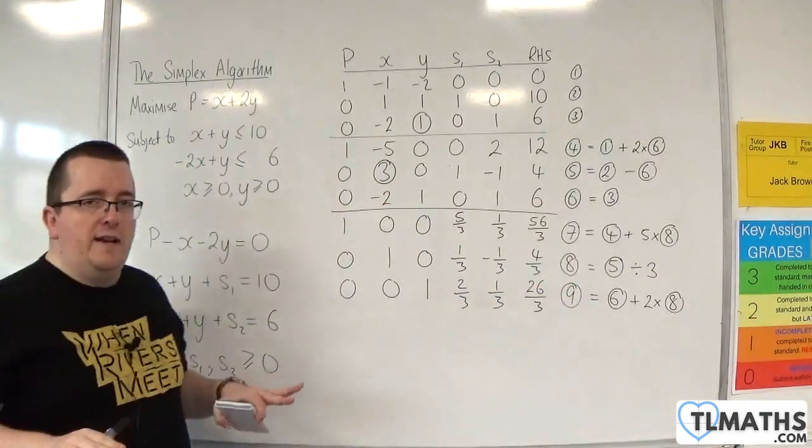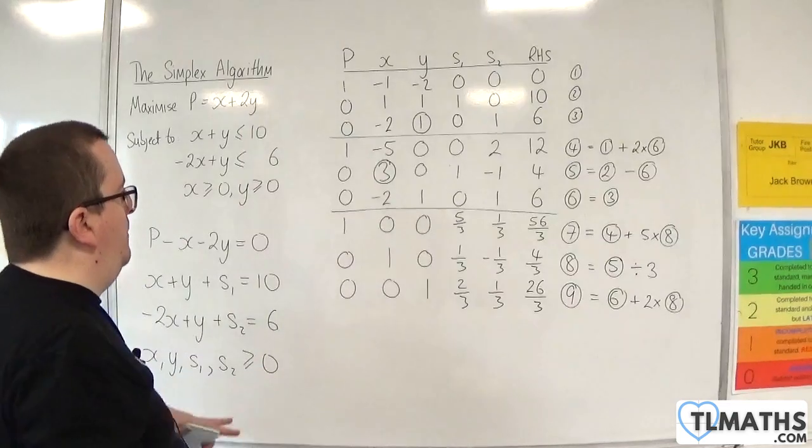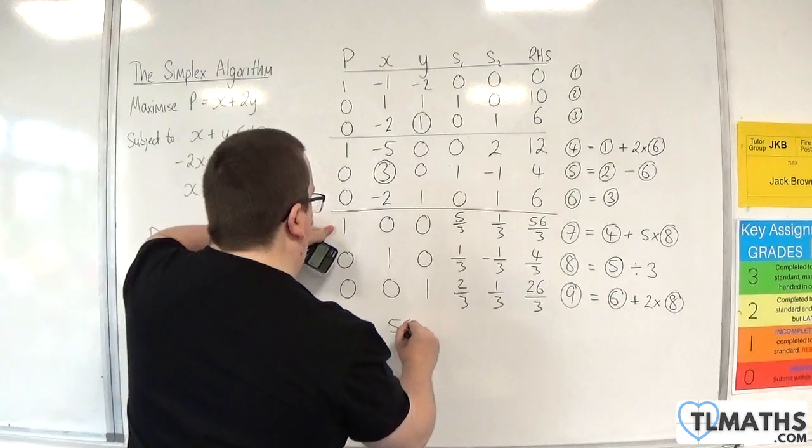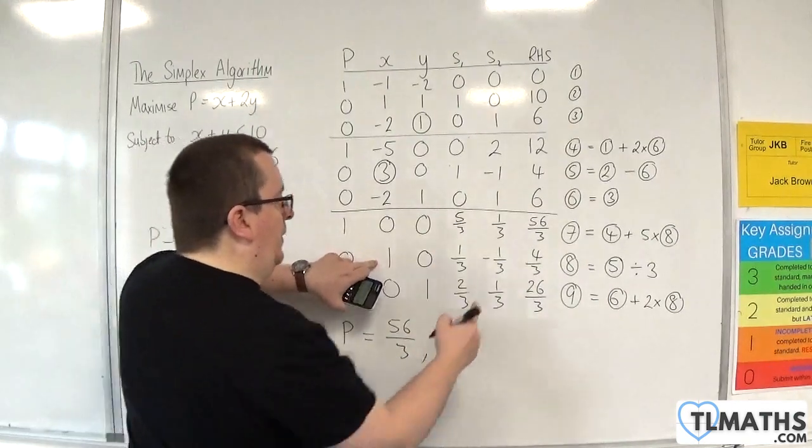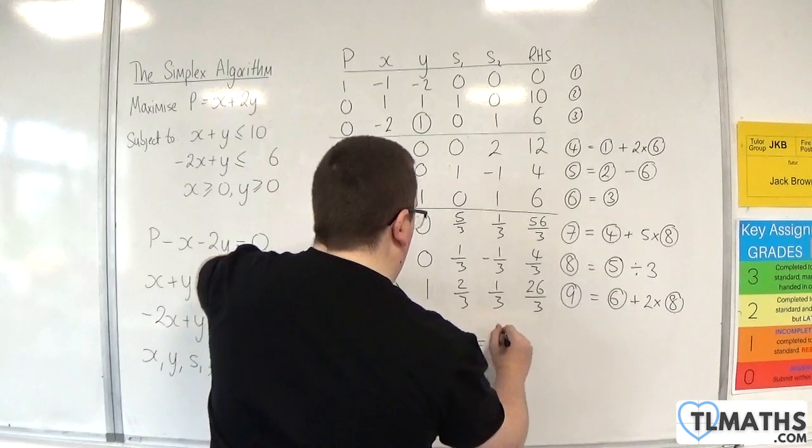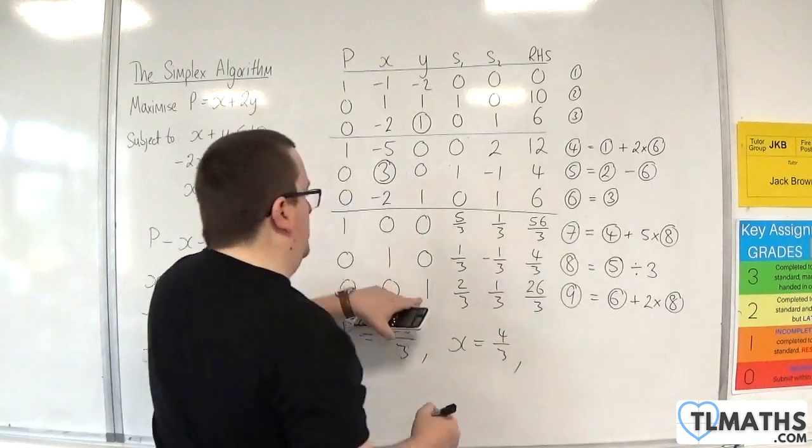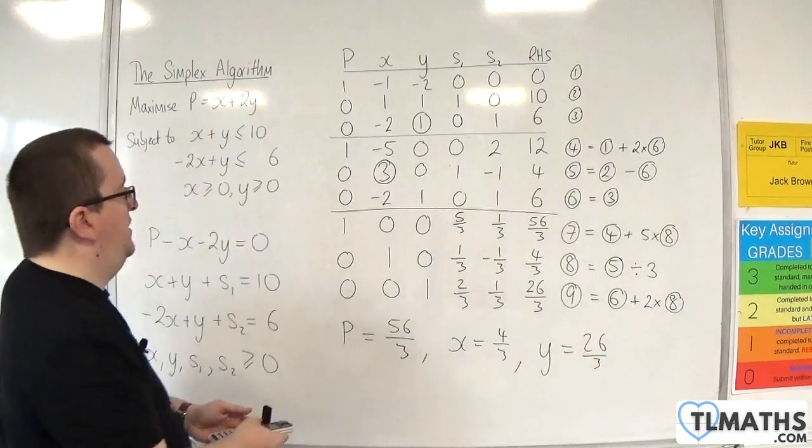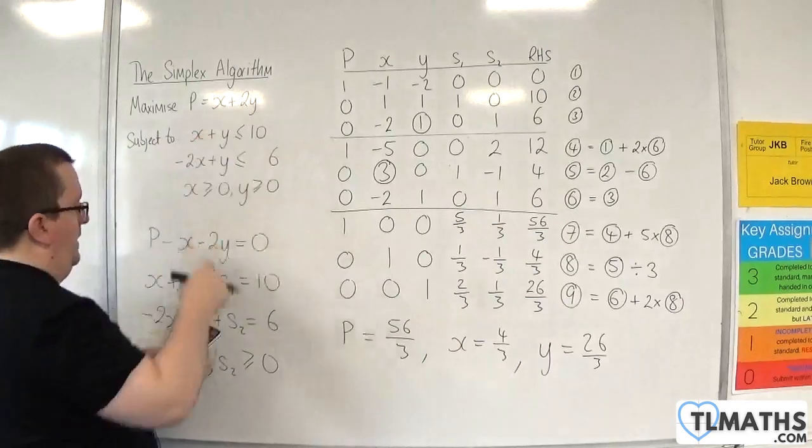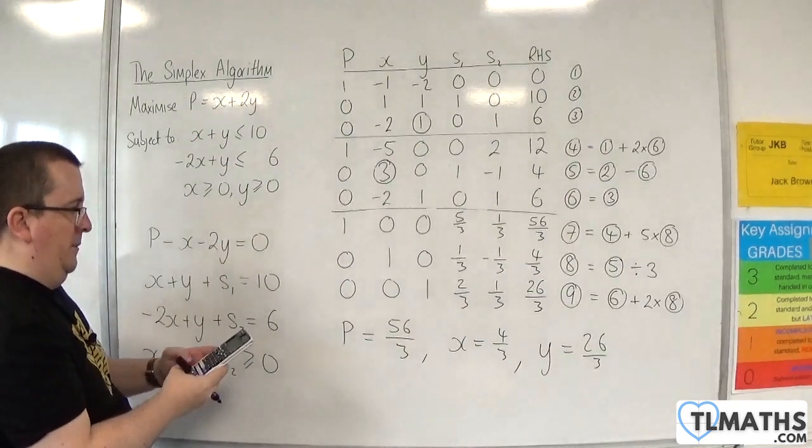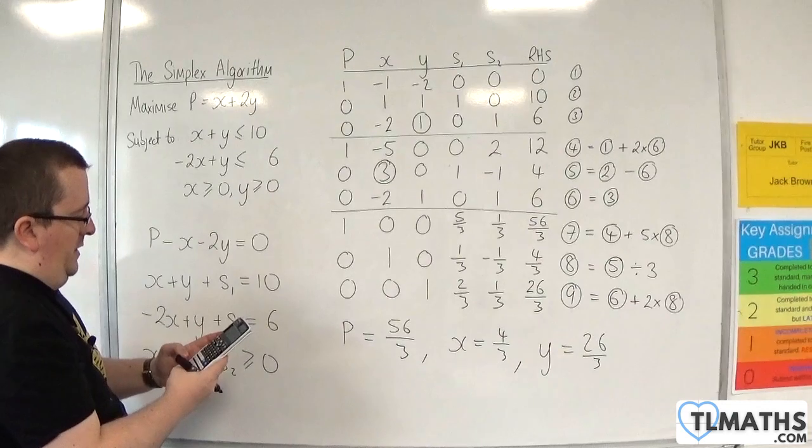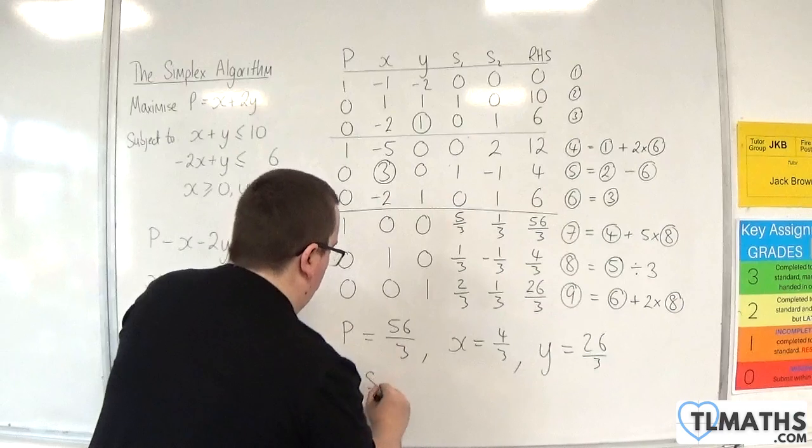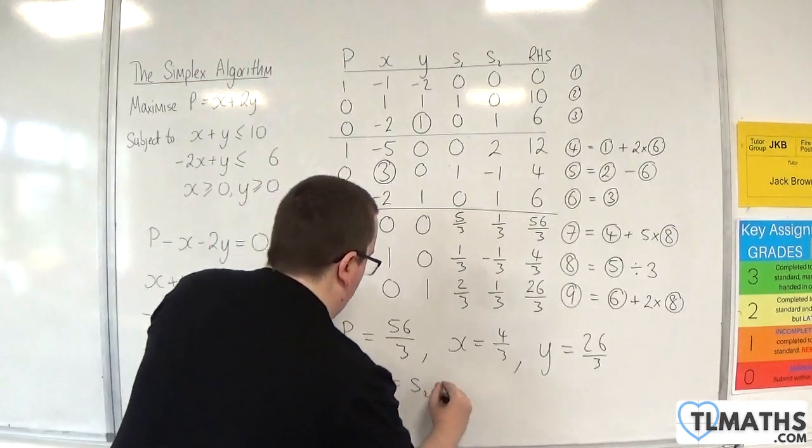So there are no more negatives in the top row. So I am done. So the maximum value of P is 56 thirds, where X is 4 thirds, and Y is 26 thirds. Now just double check that. So substitute the X and Y into that. We get 4 thirds plus 2 lots of 26 thirds. And that's 56 thirds. Now S1 and S2 are both 0.